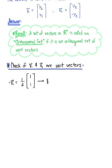Computing the magnitude, we have 1/2 multiplied by the square root of 1 squared plus 1 squared, which leaves us with √2/2, which of course does not equal 1.